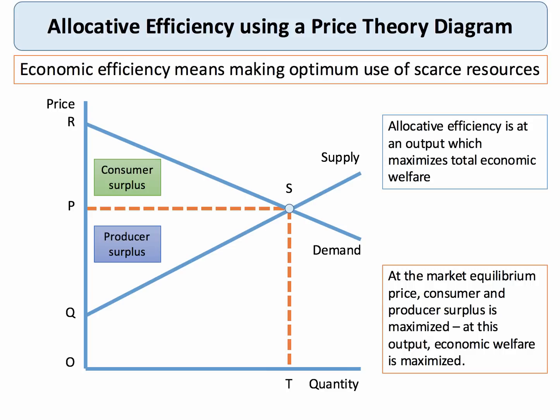Allocative efficiency is concerned with trying to make the optimum or best use of our scarce resources. It's achieved at an output which maximizes total economic welfare. Consider the equilibrium in this diagram: price P, output T, the equilibrium at point S — that is the highest level of consumer and producer surplus we can get, so we're maximizing those two areas.